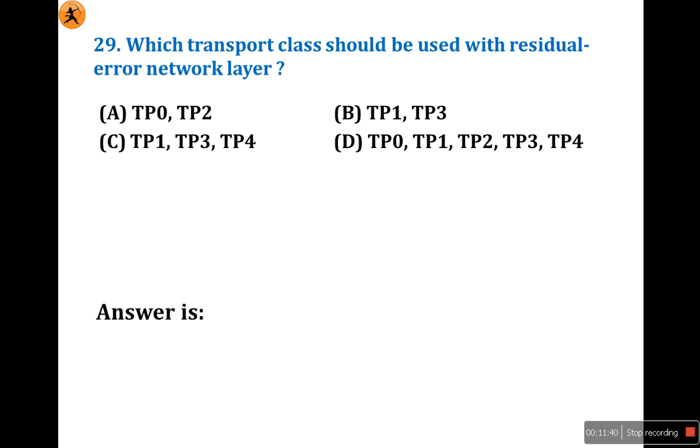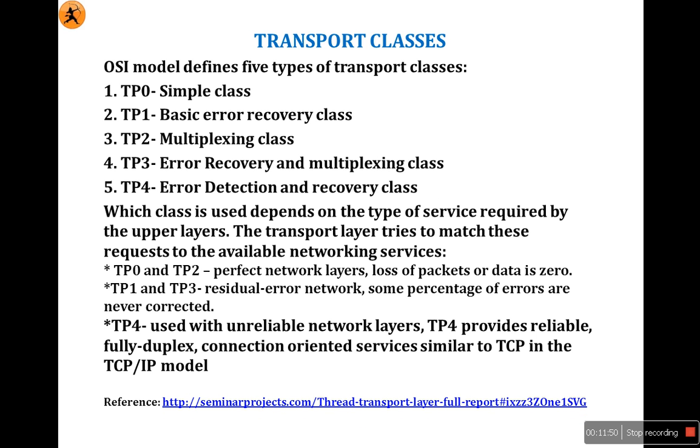Next questions 28 and 29. Before looking at these questions, we will see this table. Transport Classes - very important. OSI Model defines five types of transport classes. Transport Class 3 is Error Recovery and Multiplexing. Transport Class 4 is Error Detection and Recovery. If you know these five classes, you can answer two questions. In 2004 they asked two questions sequentially, 28th and 29th. Very important.